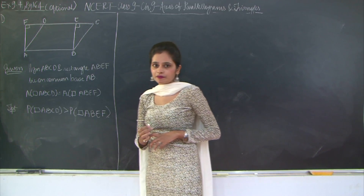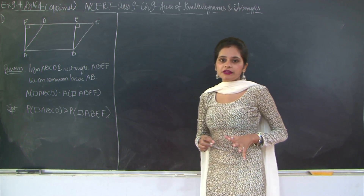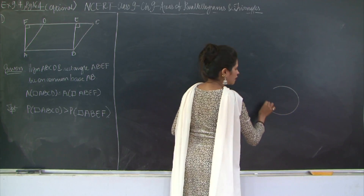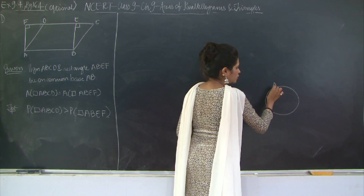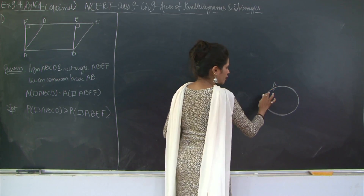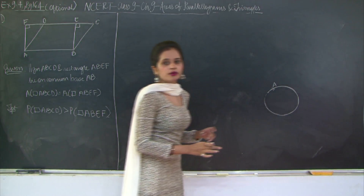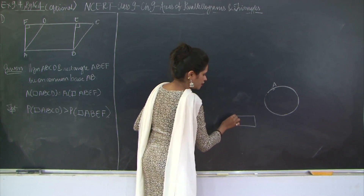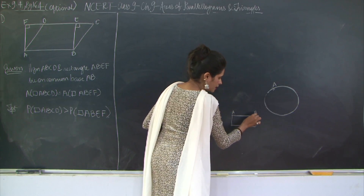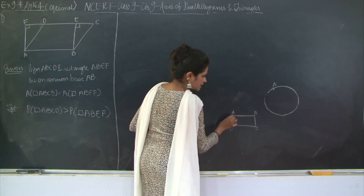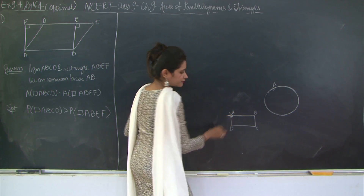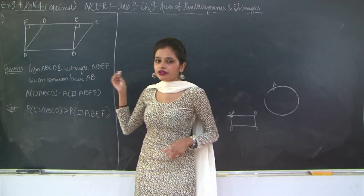P here stands for perimeter. The perimeter is the sum of all the sides. For example, let's say you have a big ground on which you start to jog at point A. When you run throughout this entire path and again reach point A, the distance covered is the perimeter. Similarly, for the rectangle, the perimeter starting from point A would be AB plus BC plus CD plus DA.